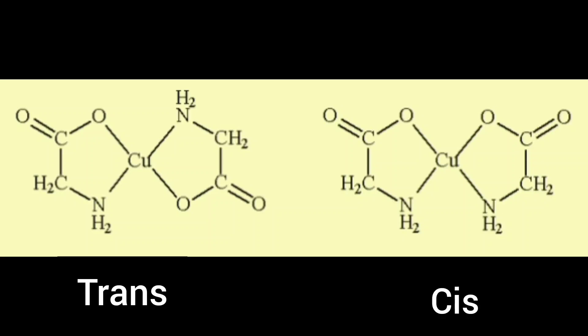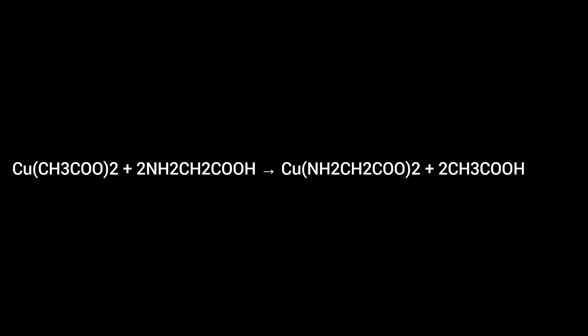In this video, I will be preparing cis and trans isomers of diglycinato copper(II) monohydrate. Diglycinato copper(II) monohydrate is prepared by the reaction of copper acetate in aqueous methanol with glycine. Glycine anion is not symmetric, and structural isomers can arise depending on the relative orientation of the ligands.